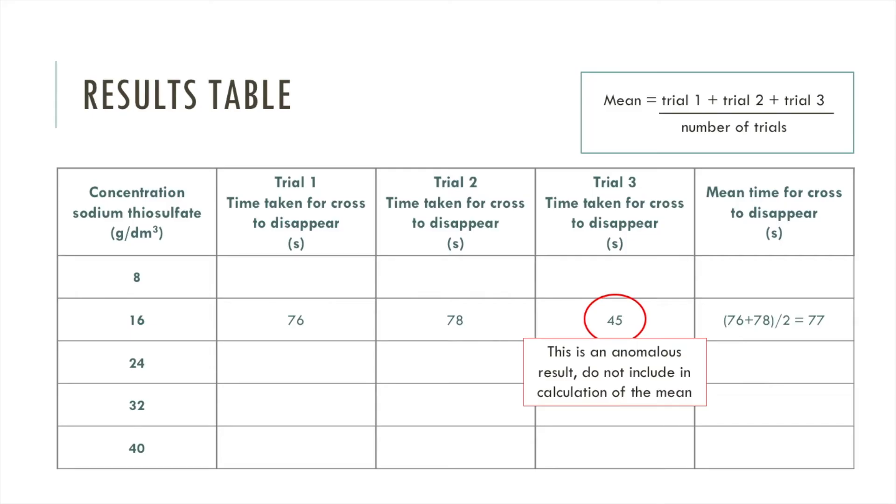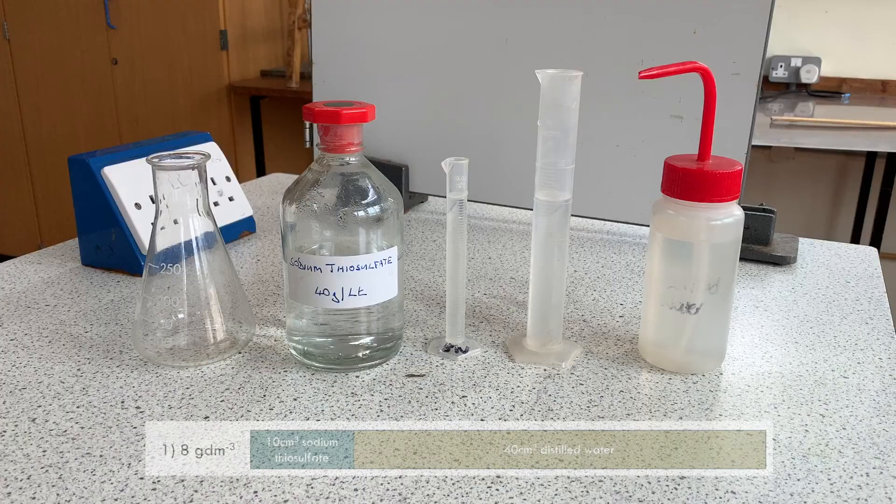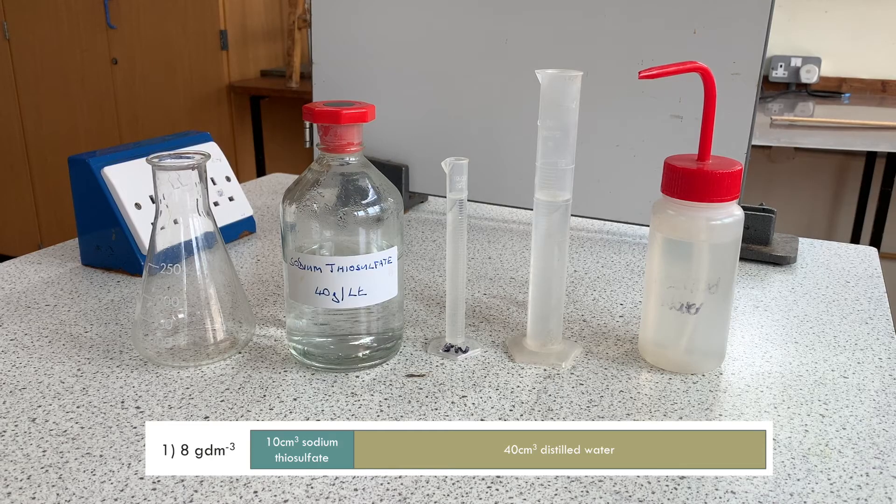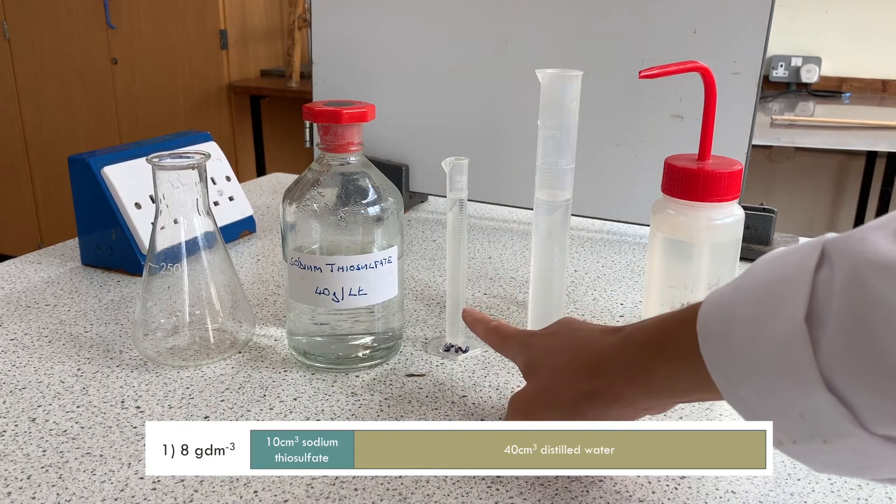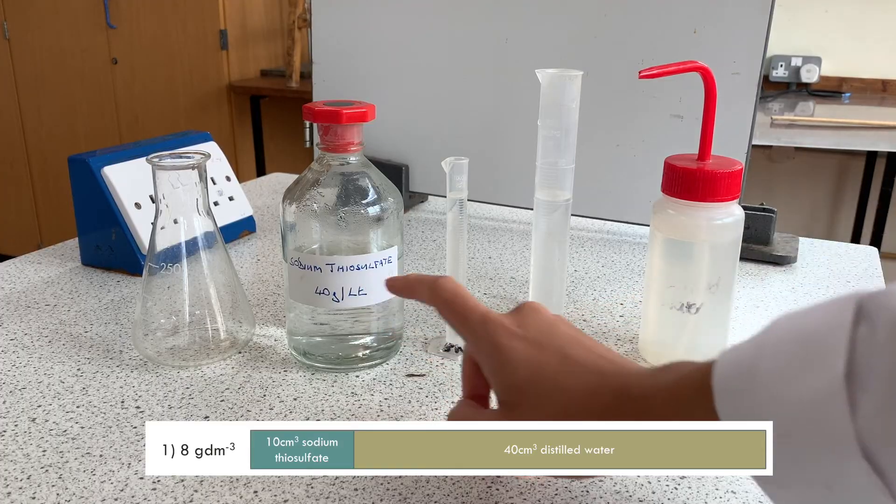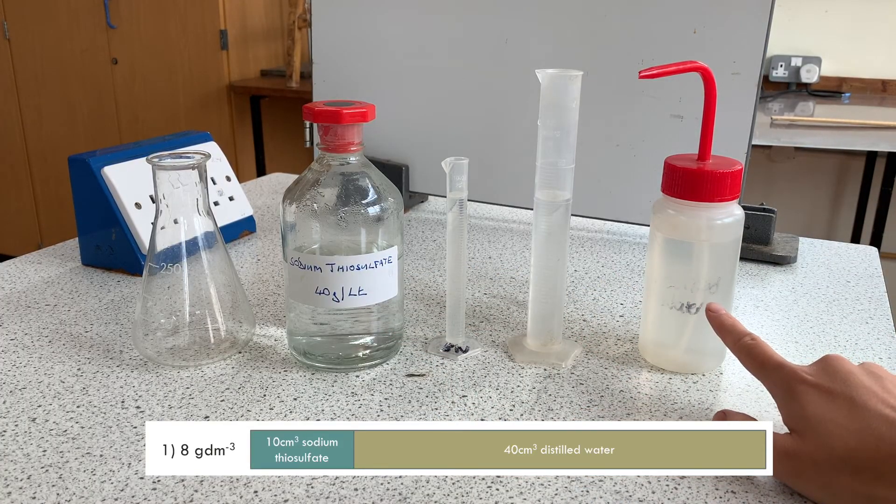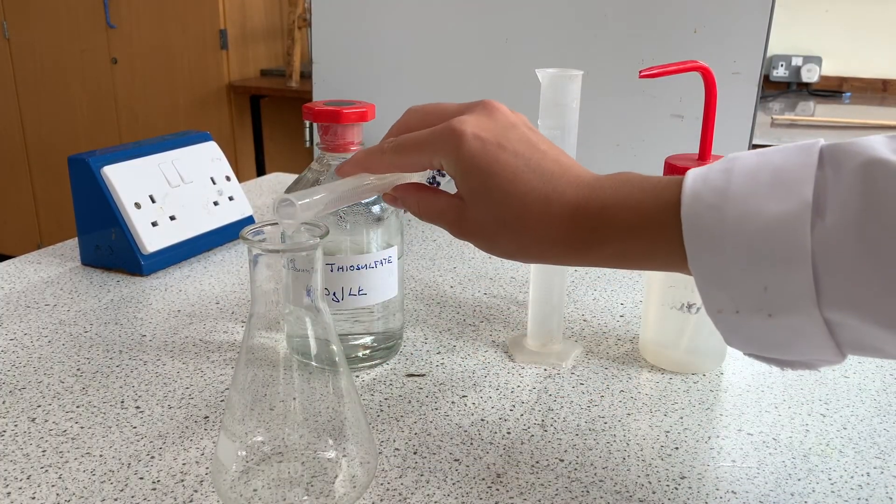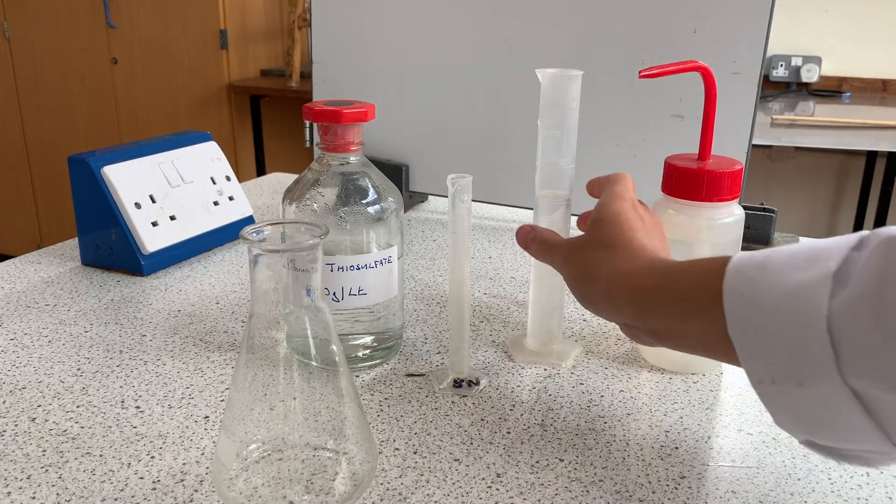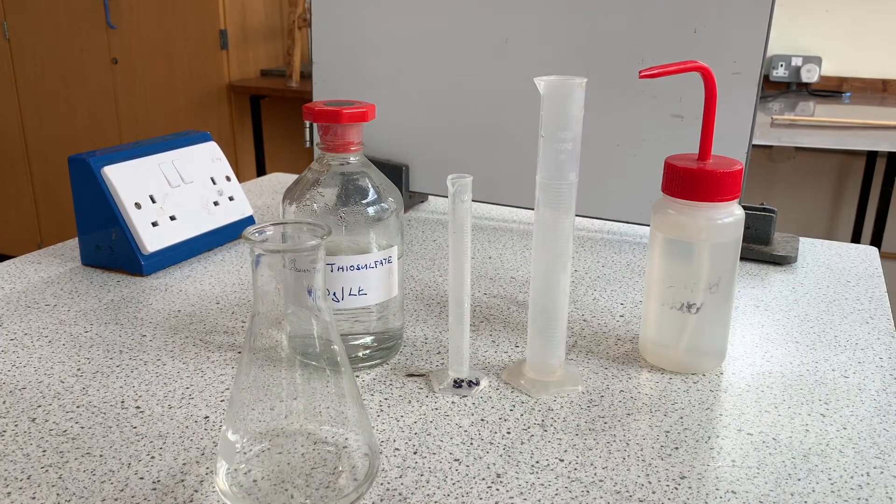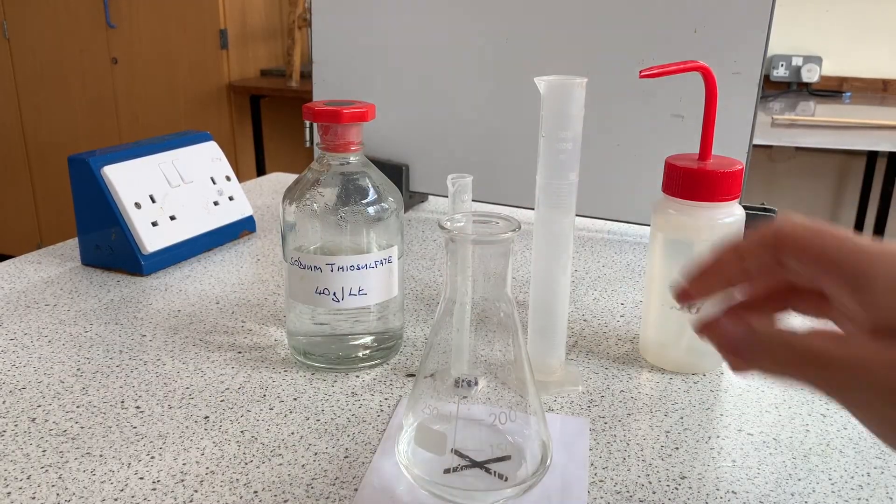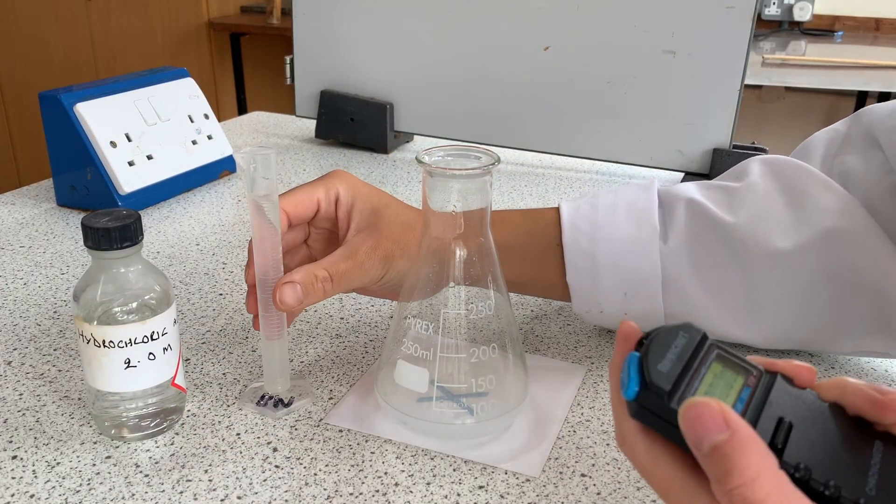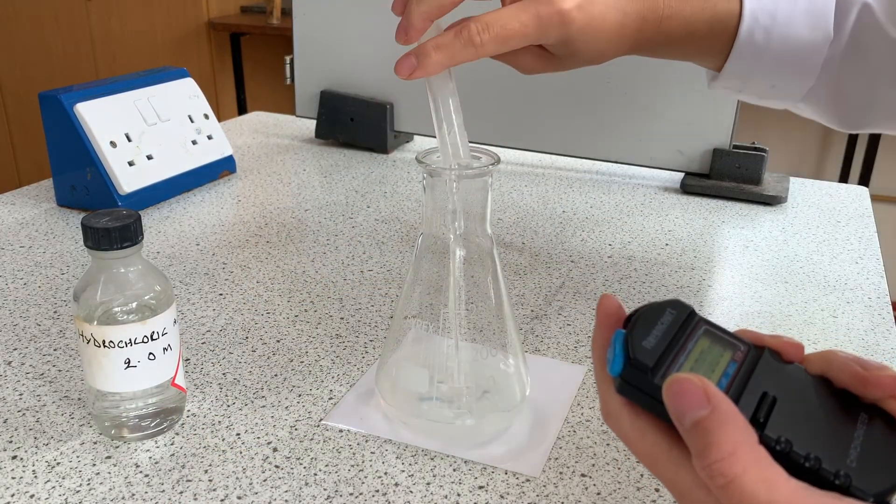Now let's see how this practical is carried out. We start off by making the 8 grams per decimetre cubed sodium thiosulfate solution. We have 10 centimetres cubed of 40 grams per decimetre cubed sodium thiosulfate and 40 centimetres cubed of distilled water. Pour that into a conical flask, give it a swirl, and then place that onto your cross. Then you need to add the 10 centimetres cubed of 2 molar hydrochloric acid. Swirl the conical flask and start the stopwatch.